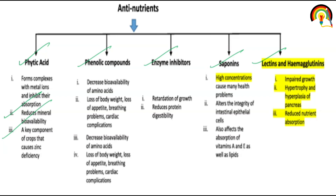Phenolic compounds decrease the availability of amino acids and can cause loss of body weight, loss of appetite, digestion problems, and breathing problems. Enzyme inhibitors — for example protease inhibitors — retard growth and reduce protein digestibility. Saponins, in high concentrations, can create health problems especially related to the intestine. They also affect the absorption of vitamin A, vitamin E, and lipids.